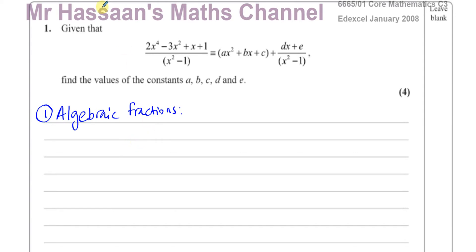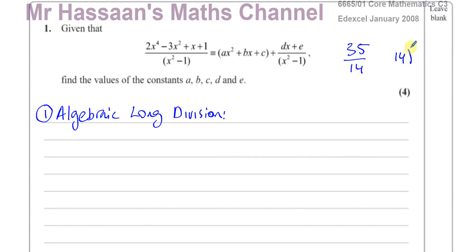With algebraic long division, it's kind of like normal long division. For example, if I have 35 divided by 14, I would put 14 on the outside and 35 on the inside and divide. Here you do exactly the same thing — you take the denominator and put it outside and the numerator inside. To make sure you don't lose track of things, you must always write 0 in place of any term that's missing. Here you have x squared and then a constant, but the x term is missing, so write plus 0x then minus 1.